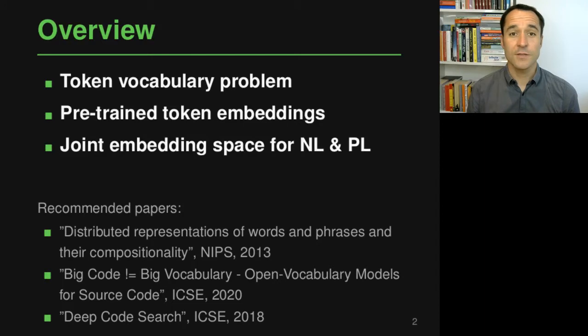Hi, welcome everybody to 'Analyzing Software Using Deep Learning.' What we'll do in this module of the course is look at one of the cross-cutting or underlying problems of this whole field: how to actually represent the source code of programs. In particular, in this module we will look into how to represent tokens — the basic building blocks of source code — and then in a later module we'll see how to use these representations to find representations for larger snippets of code.